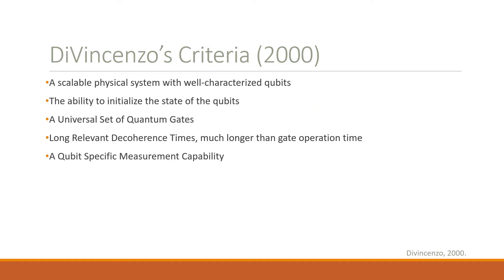In the year 2000, David DiVincenzo proposed the criteria for the requirements necessary for a quantum computer. The first is a scalable physical system with well-characterized qubits. We must also require the ability to initialize the state of the qubits, a universal set of quantum gates, long relevant decoherence times much longer than gate operation times, and qubit-specific measurement capability. Later in this presentation, we will see how Majorana-based topological qubits satisfy these criteria.